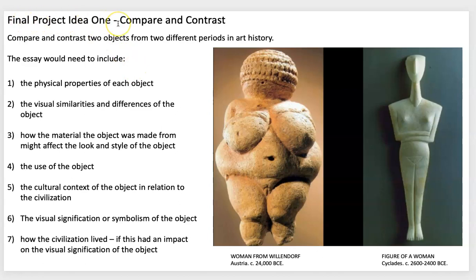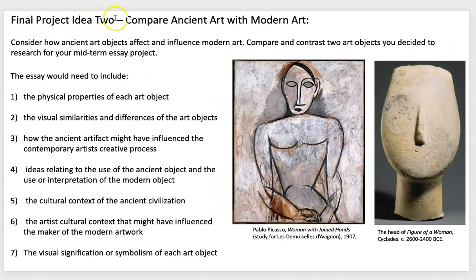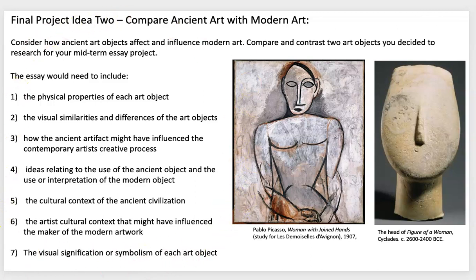That's project one. Project two is to compare ancient art with modern art. This example is from the Aegean period alongside a Pablo Picasso painting — you can already see some of the similarities. I've included another list of prompts; read through it and ask me if you have any questions if you decide to do this for your final project.